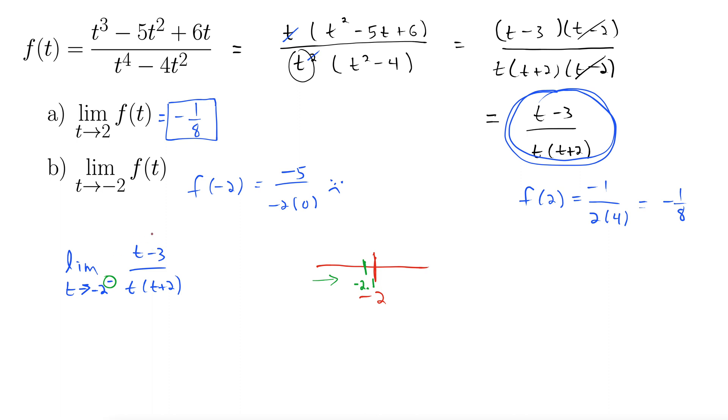So I plug it in here, negative 2.1 minus 3, well that's negative. Right here, negative 2.1, that's negative. Negative 2.1 plus 2 is still negative. So we have negative divided by a negative divided by another negative. Three negatives gives us this negative, so this whole thing is negative infinity.